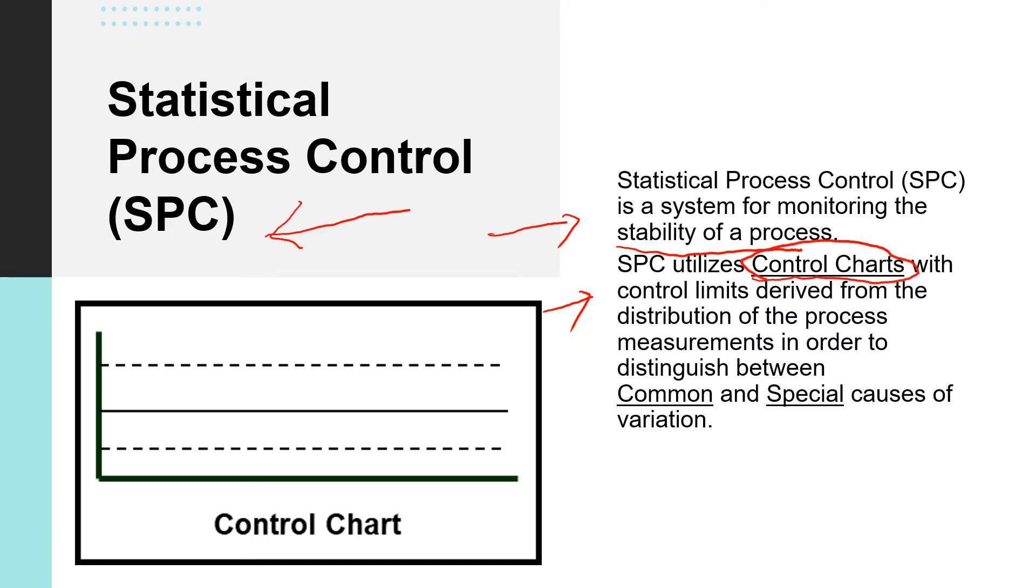In order to do SPC, we will need to plot a control chart with control limits that is derived from the distribution of the process measurements, and this control limit will help us to distinguish the common and the special causes.